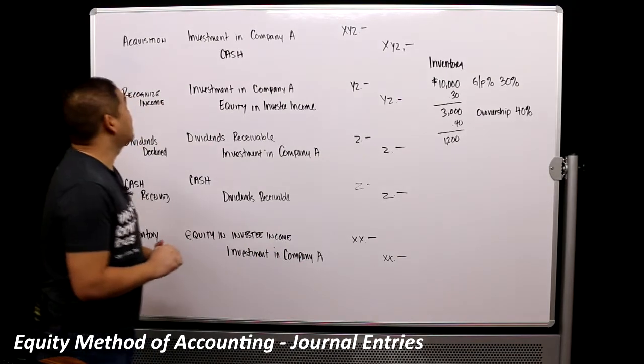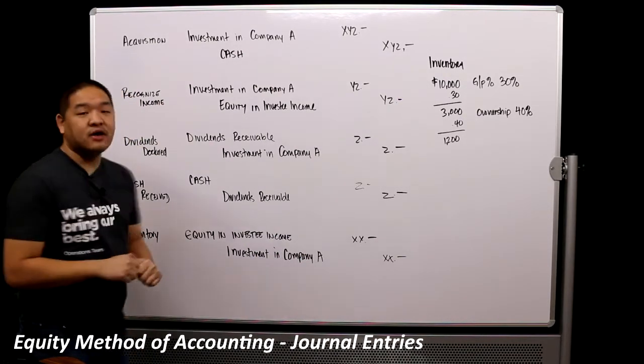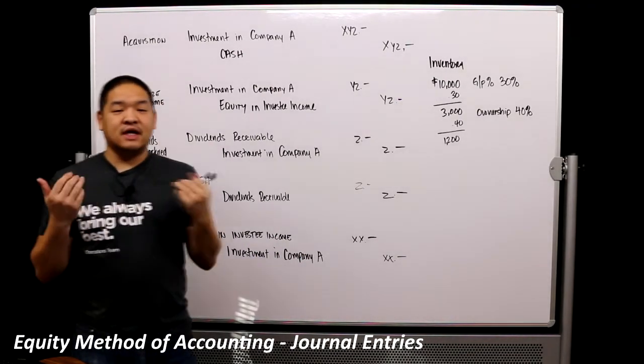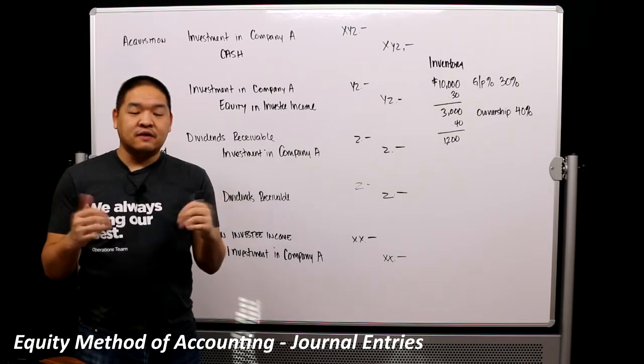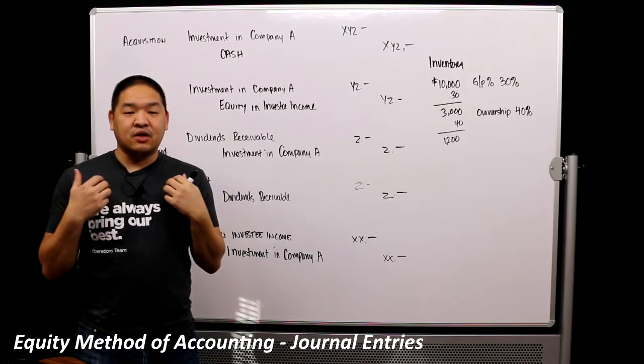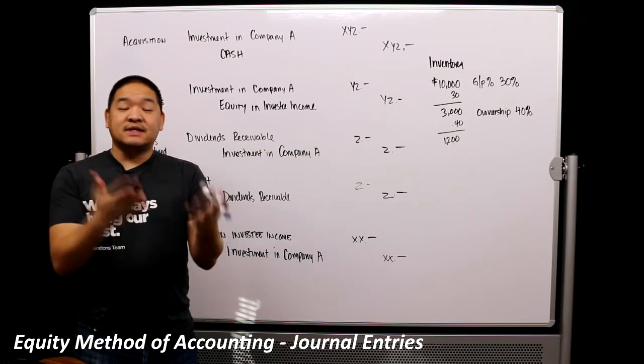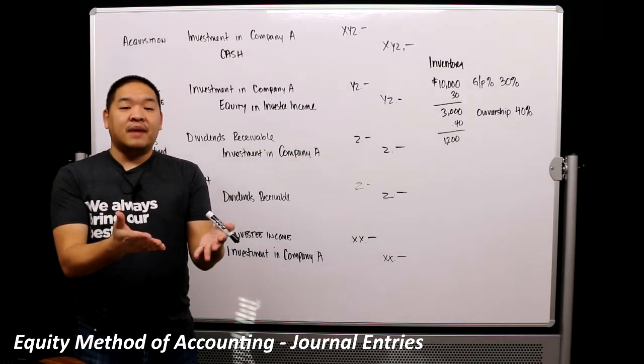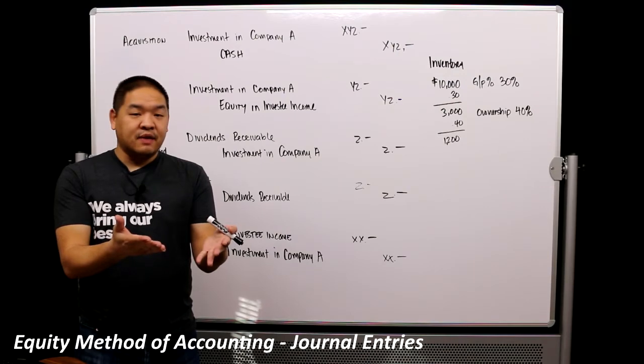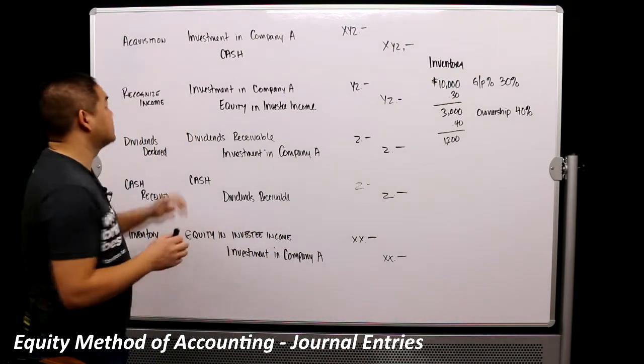So let's start with the acquisition when we acquire an investment. Going back to the example that we've been using, I'm the corporation, I decide to invest in Company A. When I decide to invest in Company A, I'm going to have to give up cash. In order to give up cash, I'm going to have to do a journal entry for that giving up of cash.